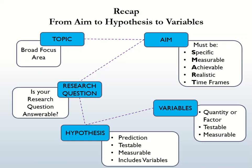Your aim should be SMART: Specific — be clear and precise about what you want to do; Measurable — can you produce evidence or results to show that you have reached your goal; Achievable — can you do this research; Realistic — do you have the necessary resources such as time, money, and skills; and Time-framed — how long will each stage of your research take.